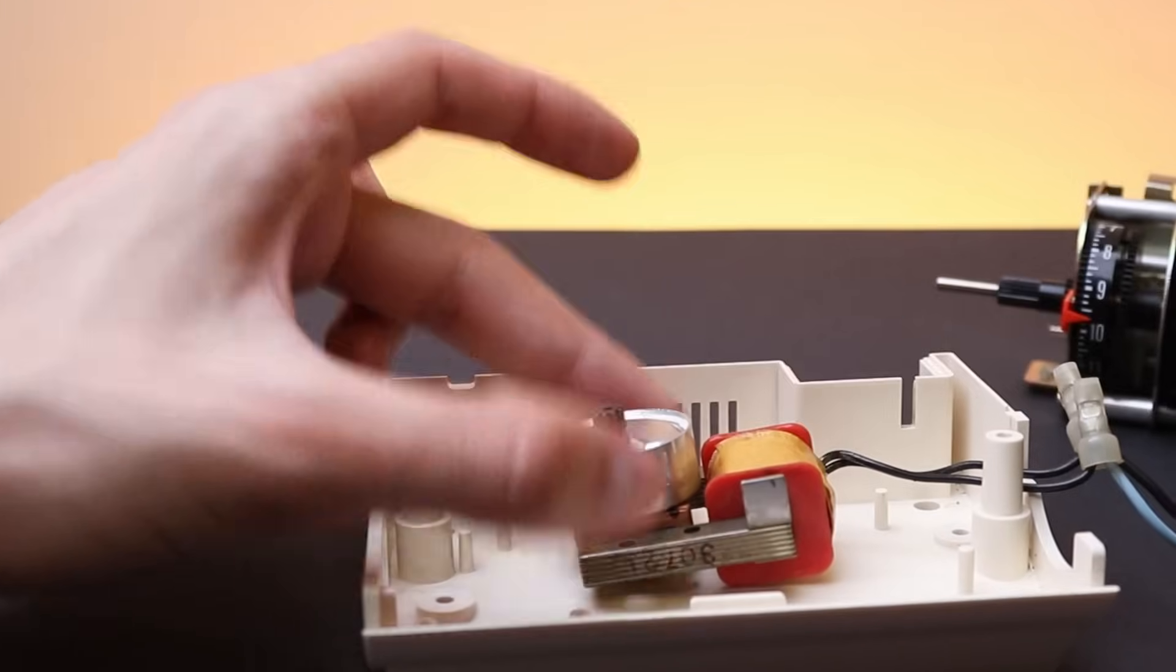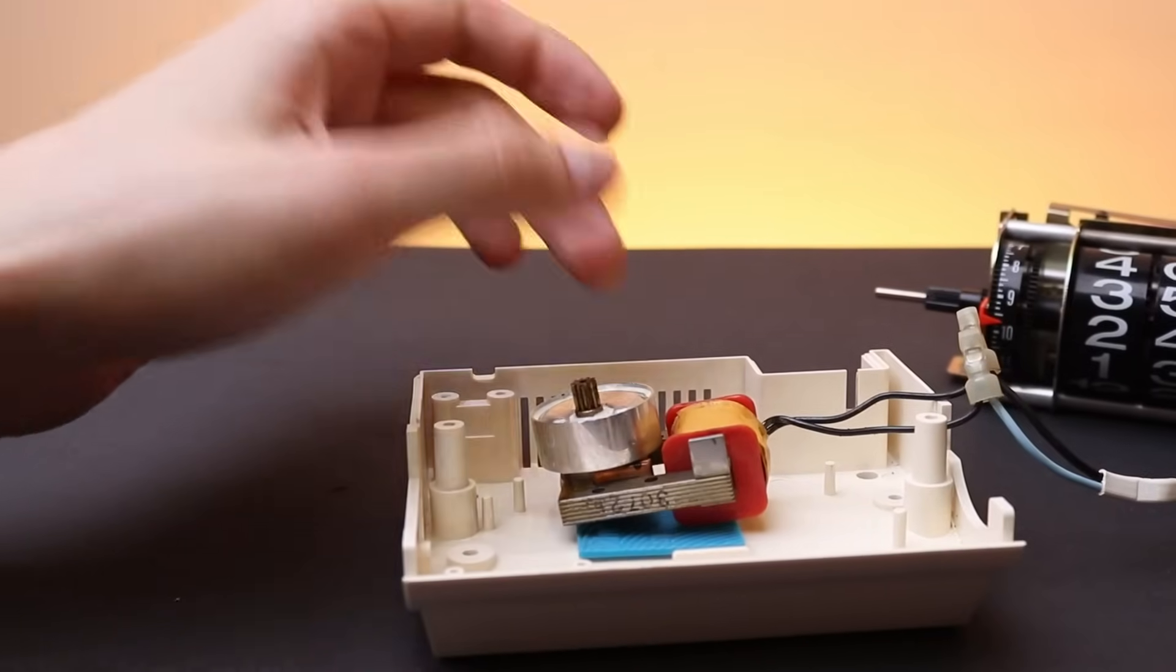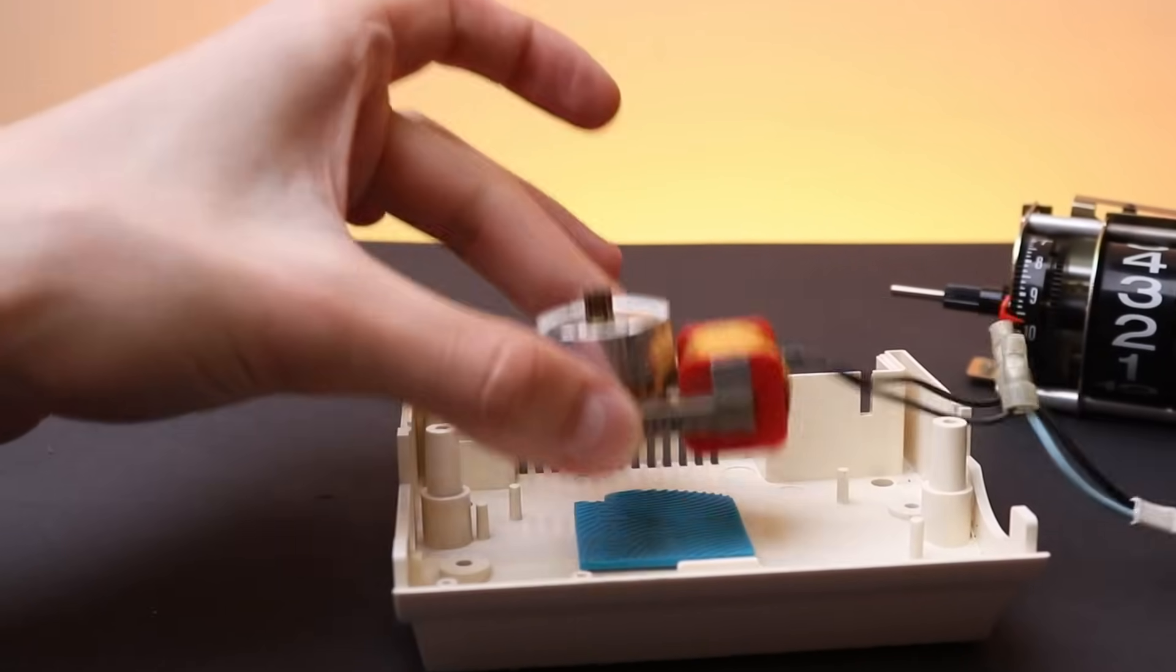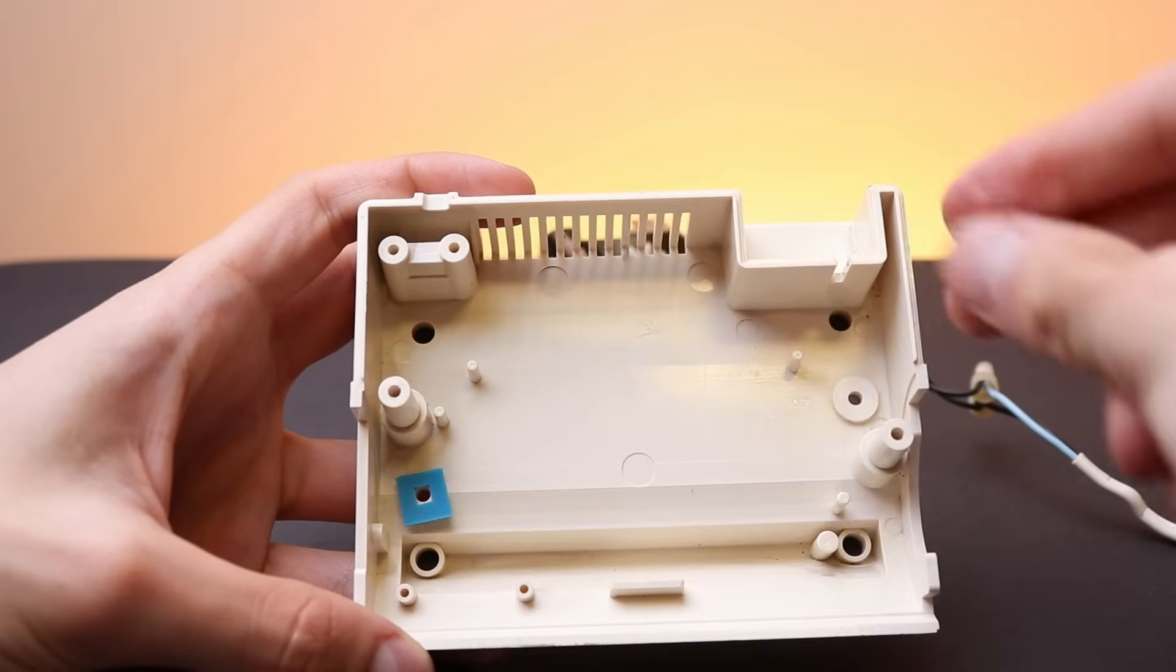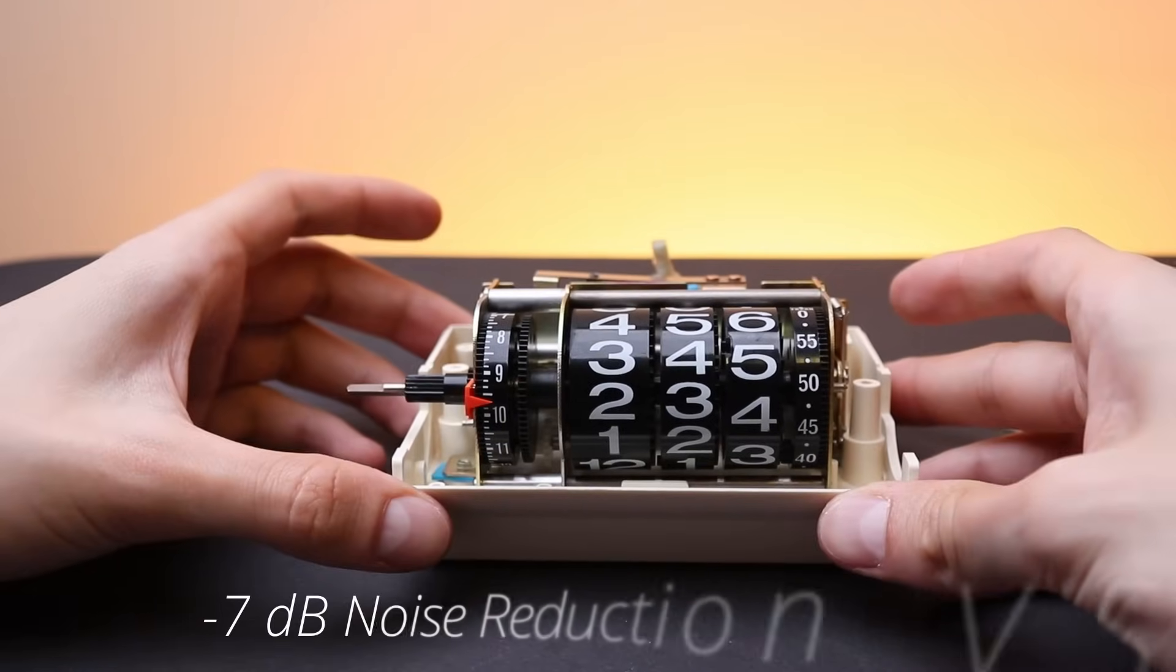So this time I tried another approach. I tried to fix the vibration from even being transferred to the clock body. So I put some rubber gaskets beneath the screws that connected the metal part with the plastic part. And this time it really helped.